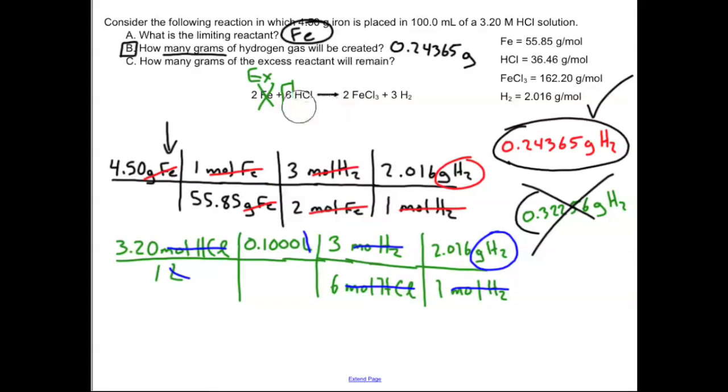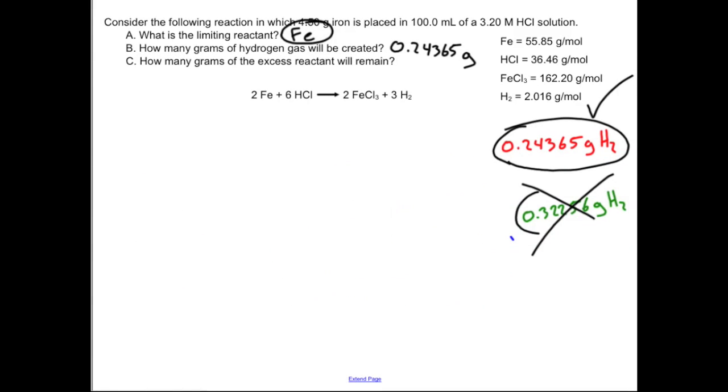So the last thing that we need to do is we need to figure out how many grams of the excess reactant will be remaining. Well we know the excess reactant is HCl. So the strategy here is to figure out how much HCl is going to react and then just subtract it off from the amount that we started with. So how much HCl is going to react? We will start with iron and we will just bounce over here.